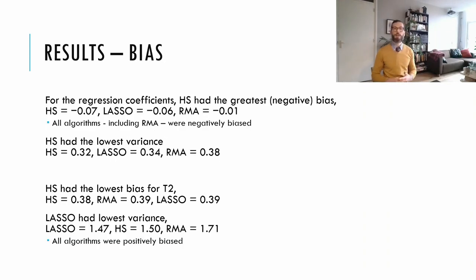We also examined the bias in the estimated parameters, and what we found is that for the regression coefficients, BRMA with a horseshoe prior had the greatest negative bias, followed by lasso BRMA, followed by industry standard RMA. Note that all of these algorithms including RMA provide negatively biased estimates, but by design, our method introduces more bias. We also found that BRMA had lower variance, especially BRMA with a horseshoe prior.